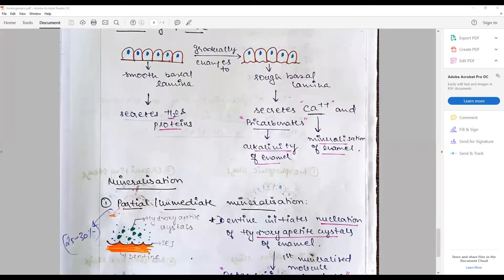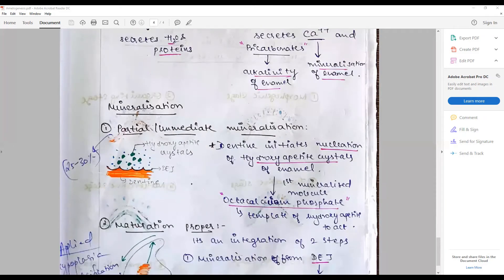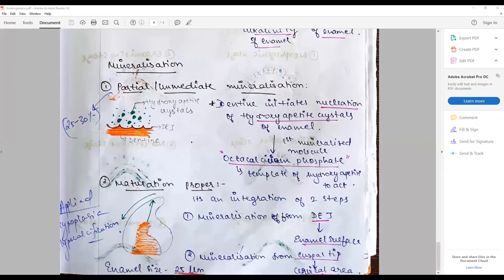Mineralization could be partial, wherein 25 to 30 percent of enamel matrix is changing into calcification. This happens with the dentin contributing to the initiation of nucleation by the dentin sialoproteins and associated proteins of the hydroxyapatite crystals of enamel. The first mineralized molecule is octocalcium phosphate, and that serves as the template of hydroxyapatite. The maturation proper.